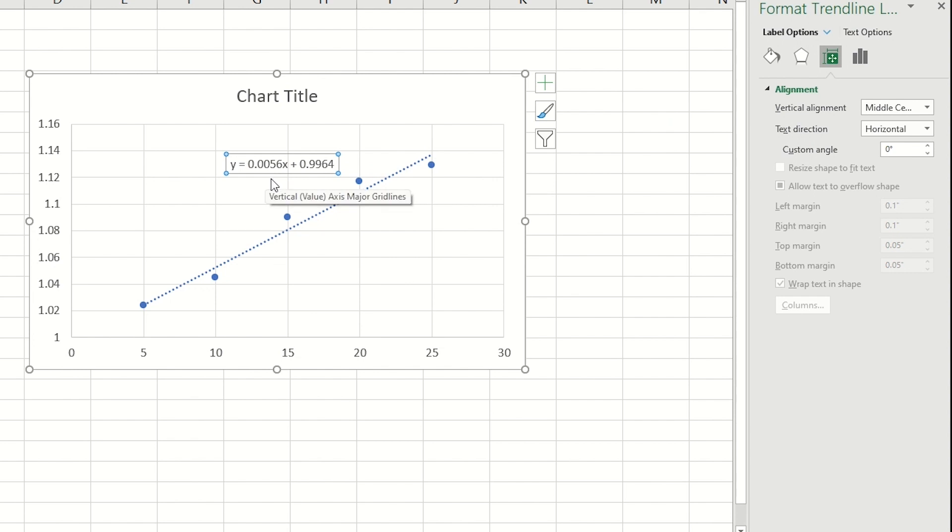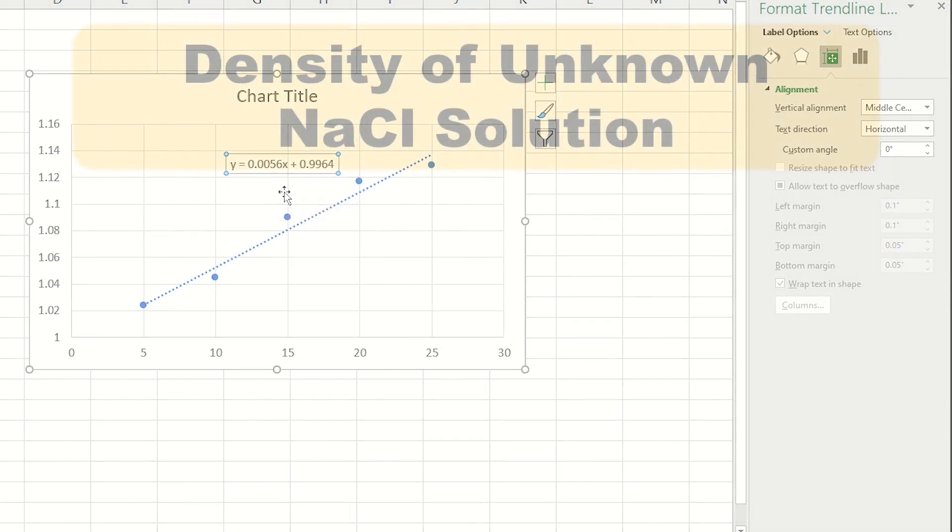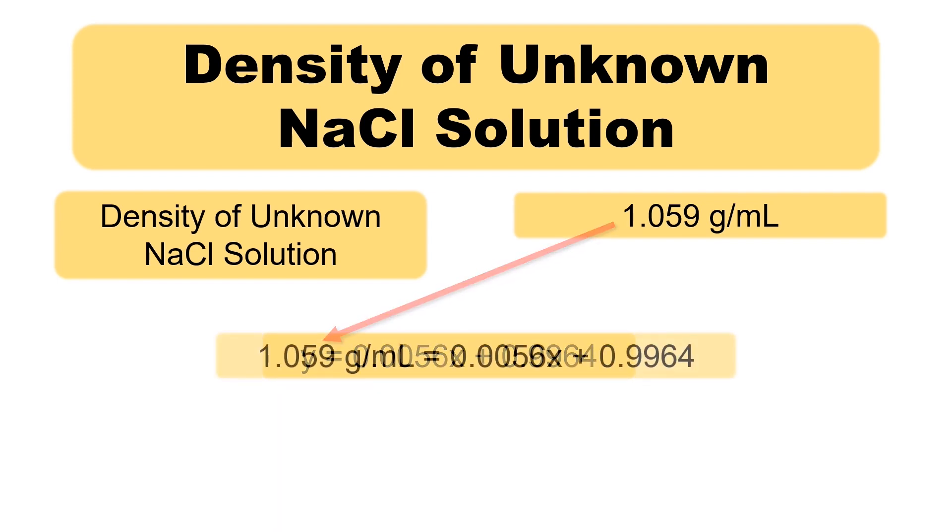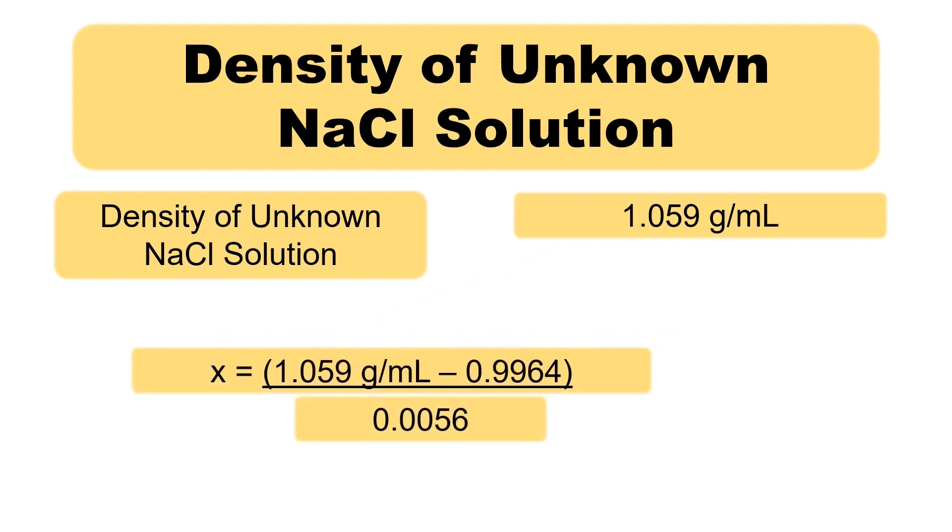The equation is now added to the best fit line. This is important because now we can measure the density of an unknown sodium chloride solution and calculate its concentration. For example, say we determine a density of 1.059 grams per milliliter for an unknown sodium chloride solution. We can substitute this value into the Y place and rearrange to solve for X, or the percent by mass concentration. We can determine that the solution is about an 11% by mass concentration.